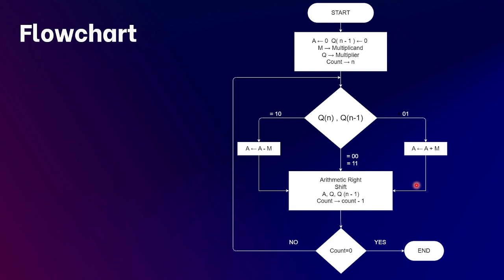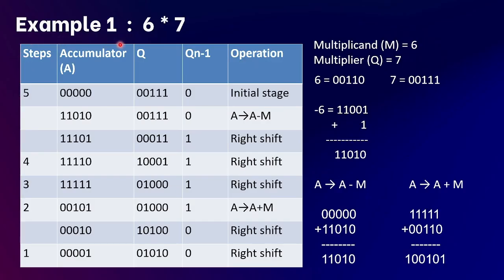Once count becomes zero we stop this process and the result is available in the accumulator. Now let's start with an example of multiplication using Booth's algorithm by taking 6 multiplied by 7. Here the multiplicand M is 6 and the multiplier Q is 7. In binary form, 6 is 00110 and 7 is 00111.